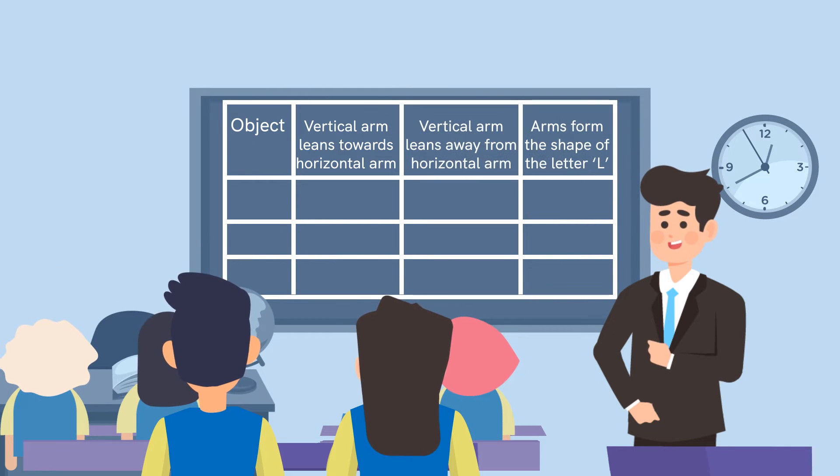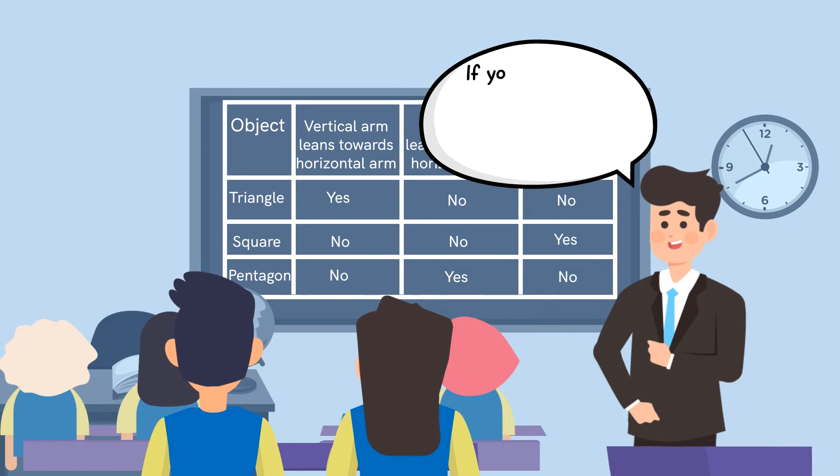We will complete the table drawn on the blackboard based on each group's responses. Once we have completed the table, we shall inform the students that if they check their geometry boxes, they will find an angle tester in it, which is also called a divider.